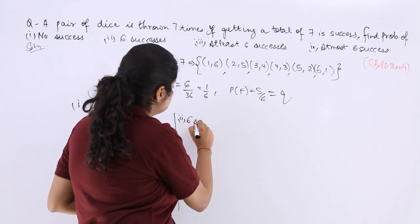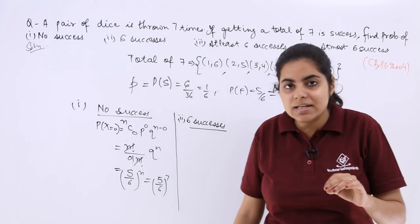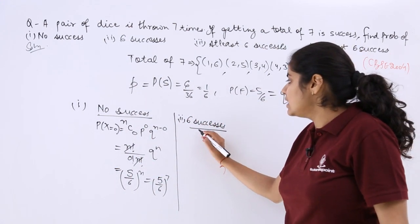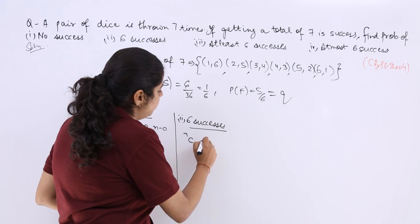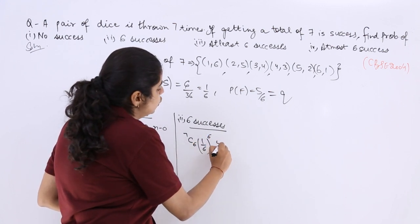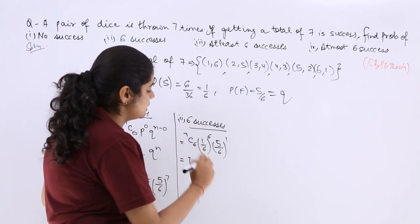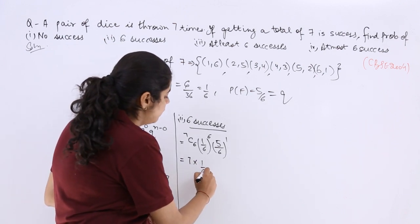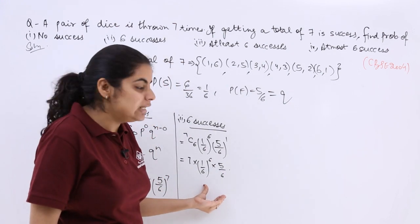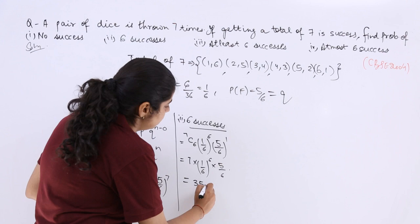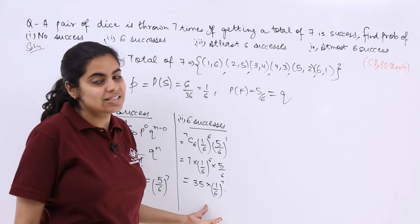The second part is 6 successes. So for 6 successes, I know the value of r is given to me as directly 6. So it is nCr means 7 should be your n again. So nCr p raised to the power r, q raised to the power n-r. Now 7C6 is basically 7C1. Multiply by 1 upon 6 whole raised to the power 6, multiply by 5 upon 6. So either you can leave your answer here or you can do 7 times 5 which is 35, multiply by 1 by 6 whole raised to the power 7. So this is the answer to the second part.